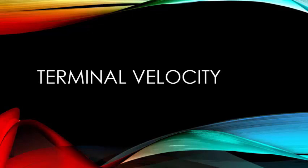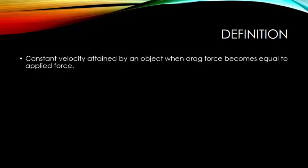Today our topic of discussion is terminal velocity. Terminal velocity is the constant velocity attained by an object when the drag force becomes equal to the applied force. Consider a body moving through a viscous medium — when an object moves through a medium, a drag force is exerted upon it. When drag force and applied force become equal, the object moves with a constant velocity, which we call terminal velocity. An example is the terminal velocity attained by a rain droplet falling under gravity.